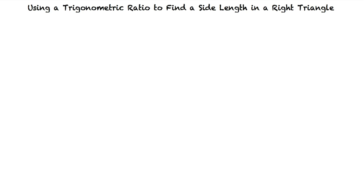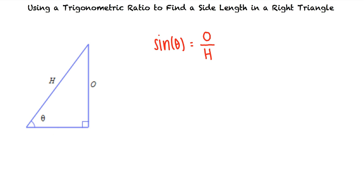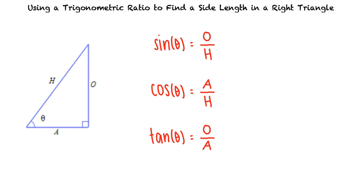This means we will need to use the three major trigonometric ratios. Let's review these ratios. Say we have a right triangle with angle theta. We know that sine theta equals the length of the opposite side over the length of the hypotenuse, cosine theta equals the length of the adjacent side over the length of the hypotenuse, and tangent theta equals the length of the opposite side over the length of the adjacent side. Knowing these ratios allows us to solve for a missing side length in a right triangle.